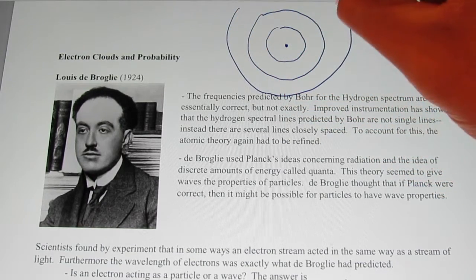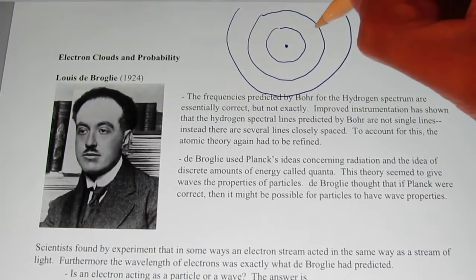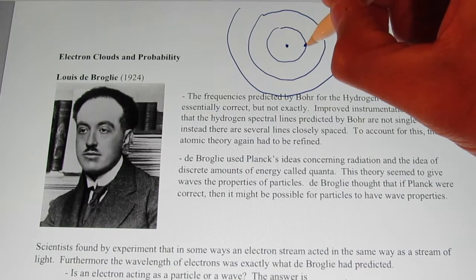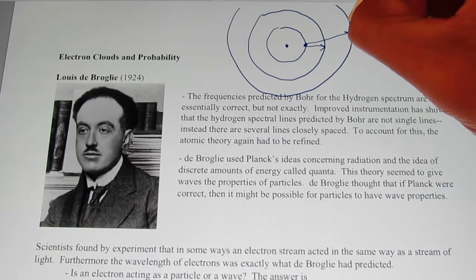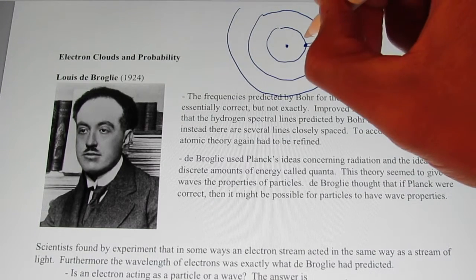And one farther away and so on and so on that electrons can move from one orbit or energy level to another when energy is added. And when they fall back down, energy is released.